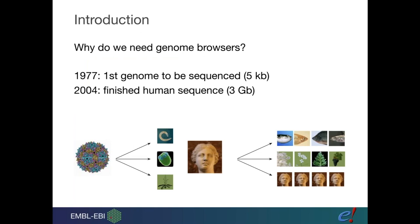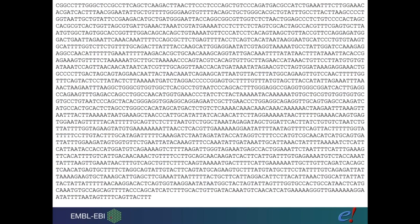Why do we need genome browsers? Genomes are massive and produced at a phenomenal rate. The first genome sequenced was a phage by Fred Sanger in 1977 — just 5kb. The human genome was finished in 2004, though not truly complete, and has had many improvements since. Projects like the Vertebrate Genomes Project produce large numbers of genomes from different species, and projects like NOMAD and 1000 Genomes show the scale of individual variation. Genome sequences are just a series of letters — completely meaningless without annotation.